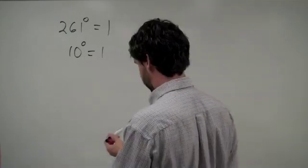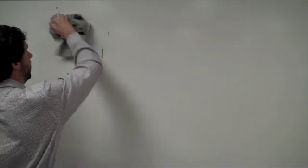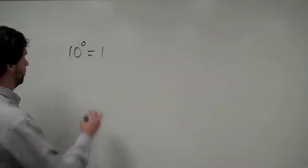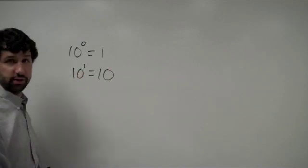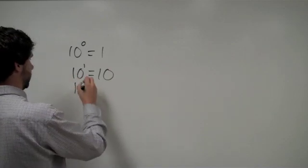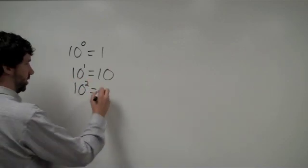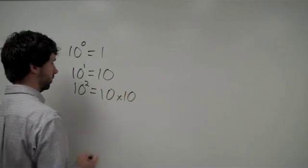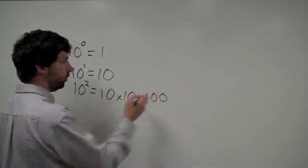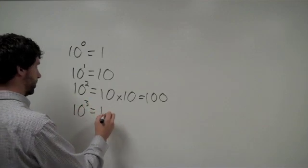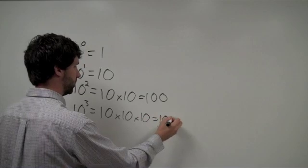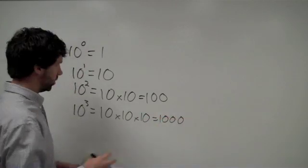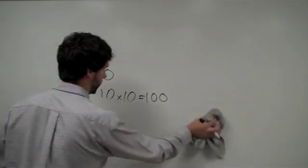Moving on with exponents, we have 10 to the 0 equals 1. Well, 10 to the 1 is just 1 ten, essentially. 10 to the 2nd is 10 times 10, which is 100. And so on. 10 to the 3rd is 10 times 10 times 10, 3 times, which is 1,000. Just the basics of exponential notation.